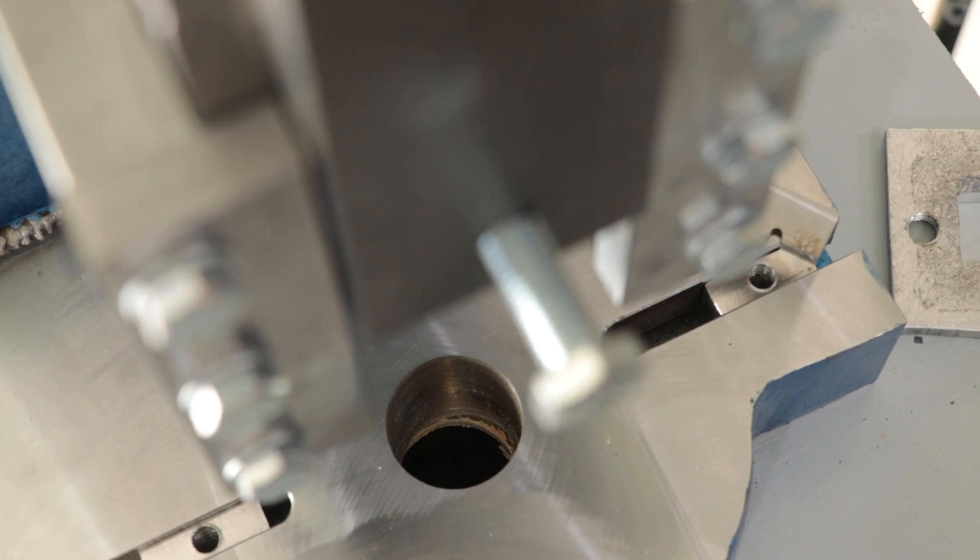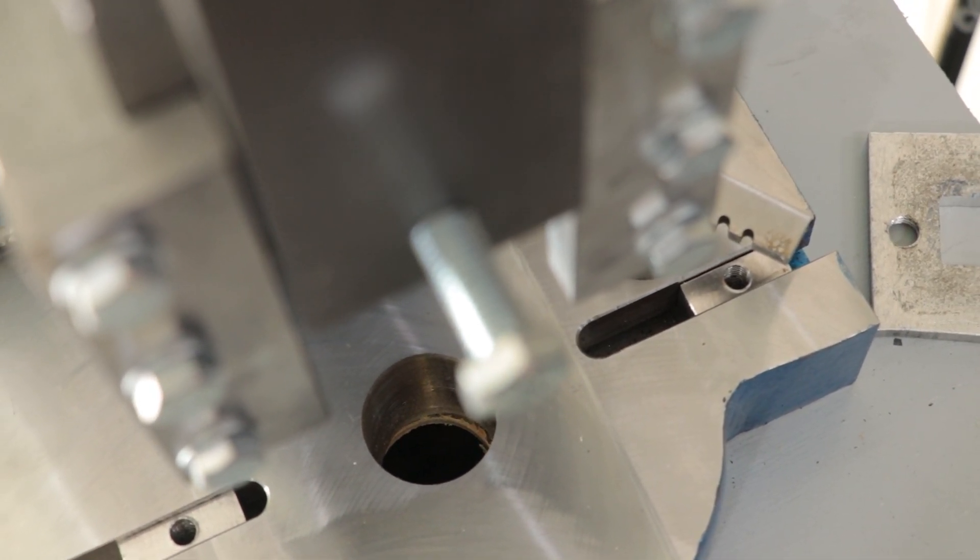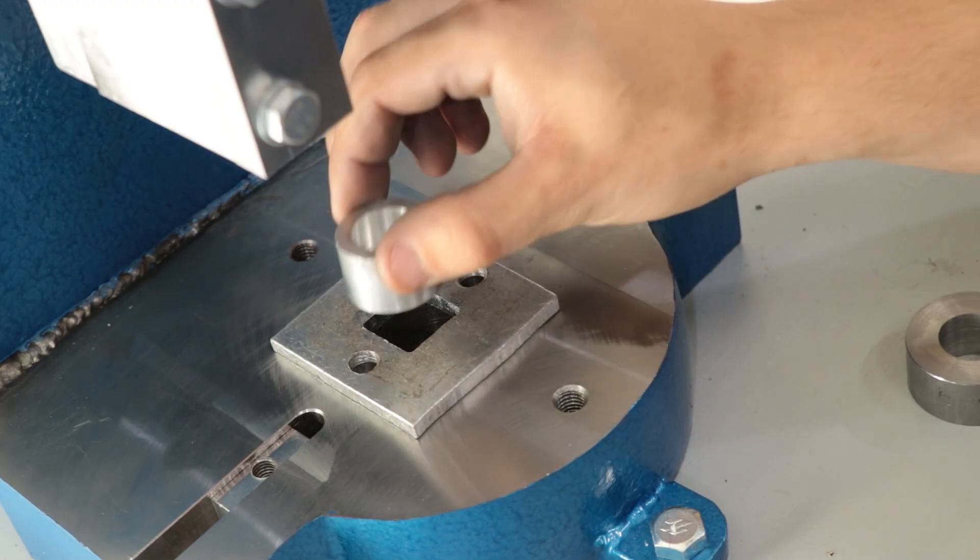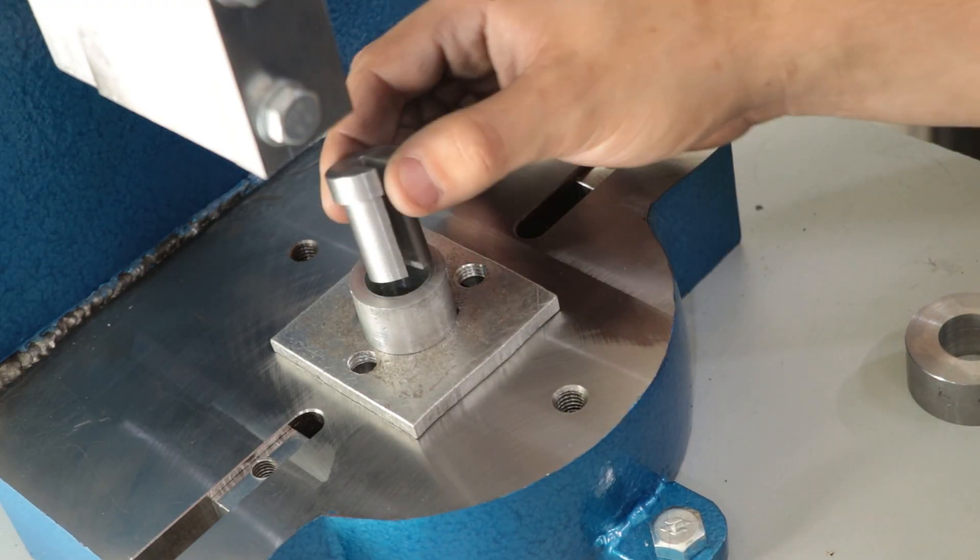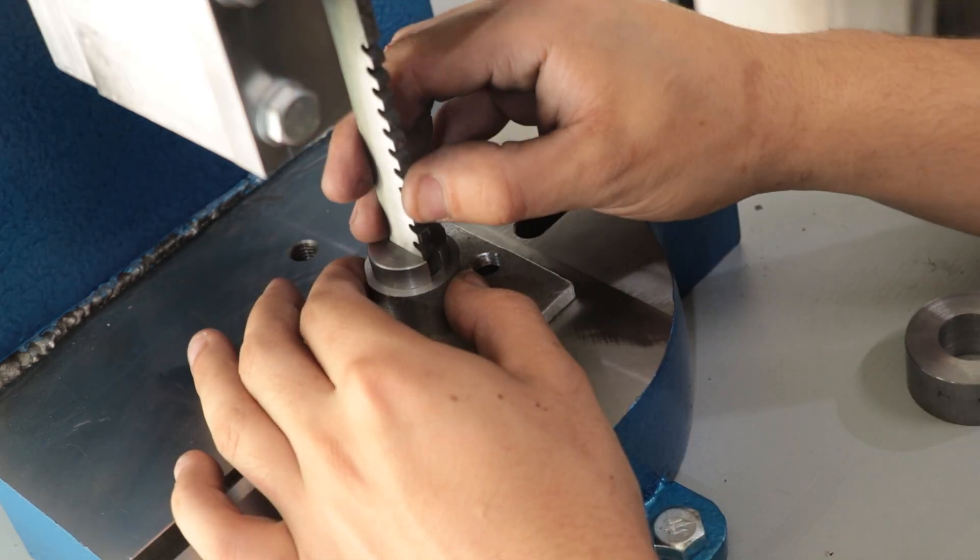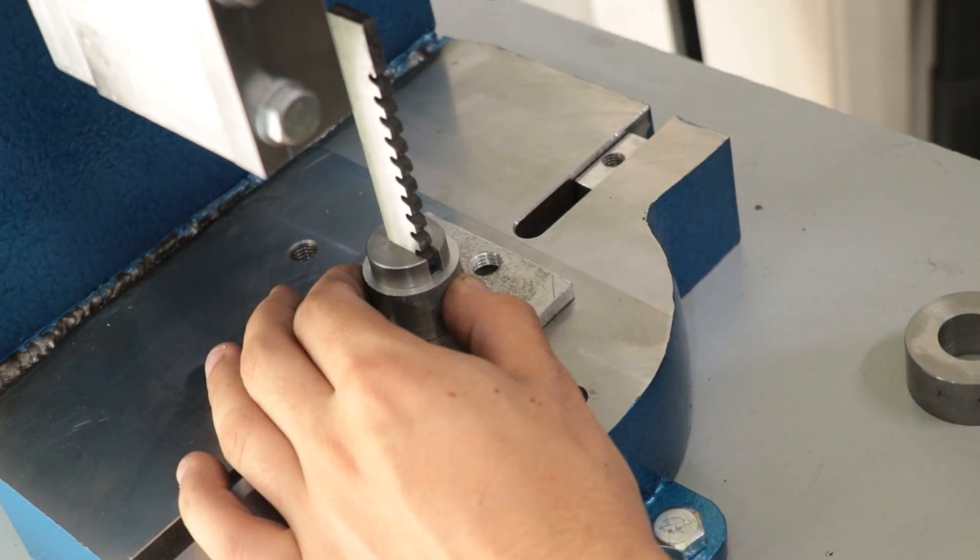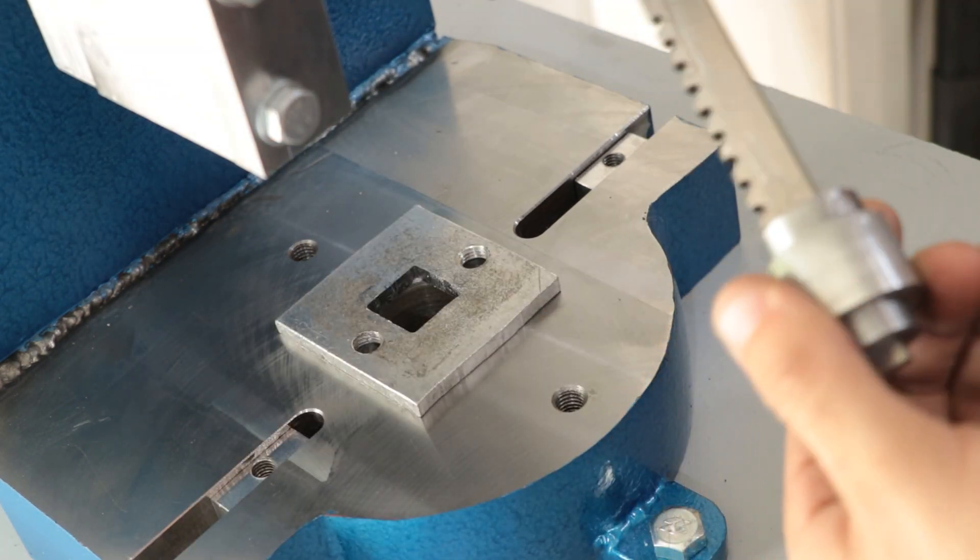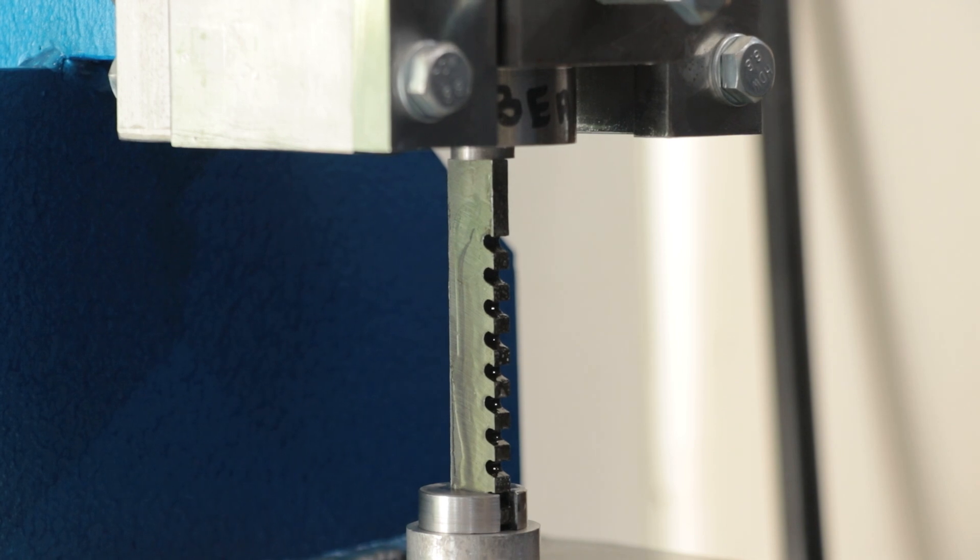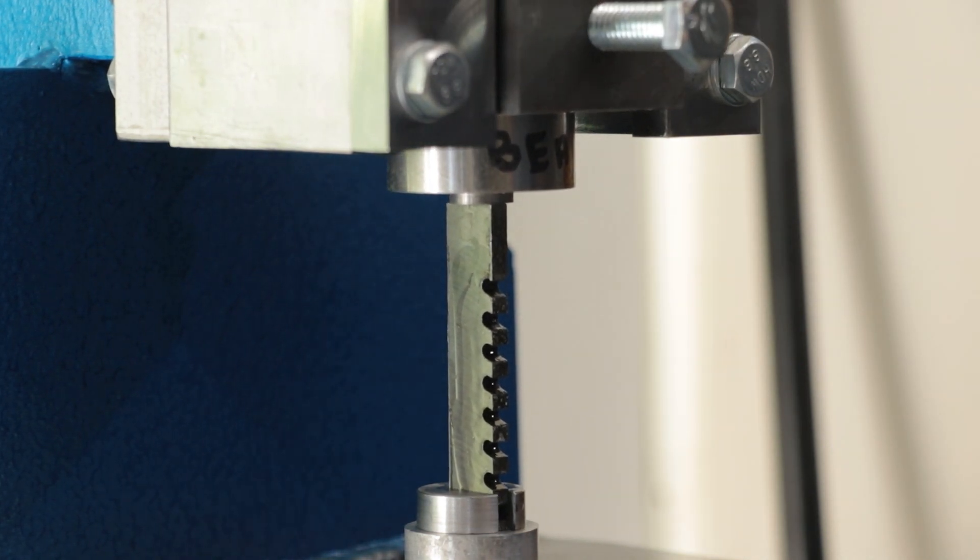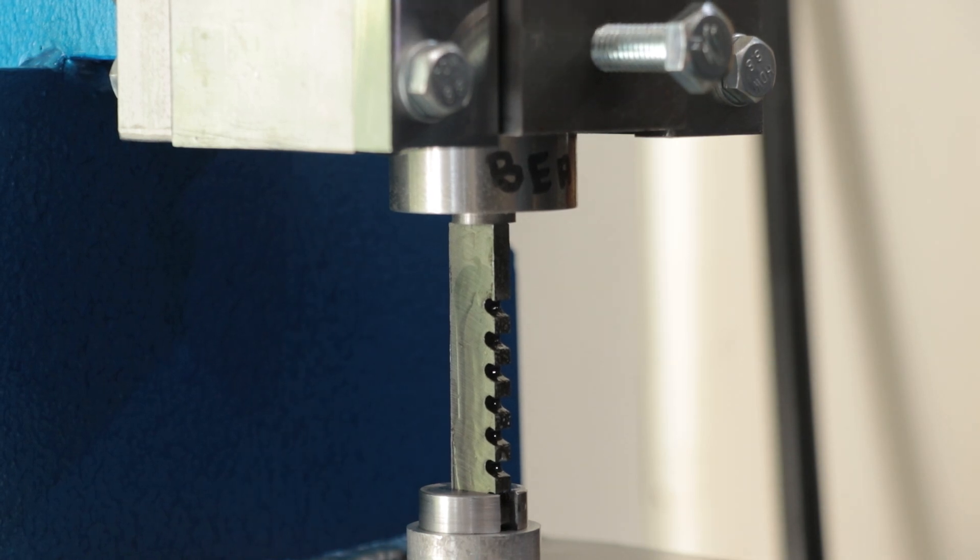For anyone wondering, there is a hole in the stand for the broaches to go, and there are some towels on the bottom in case I don't catch it. And that broach is going in really easily, which is a really good sign.